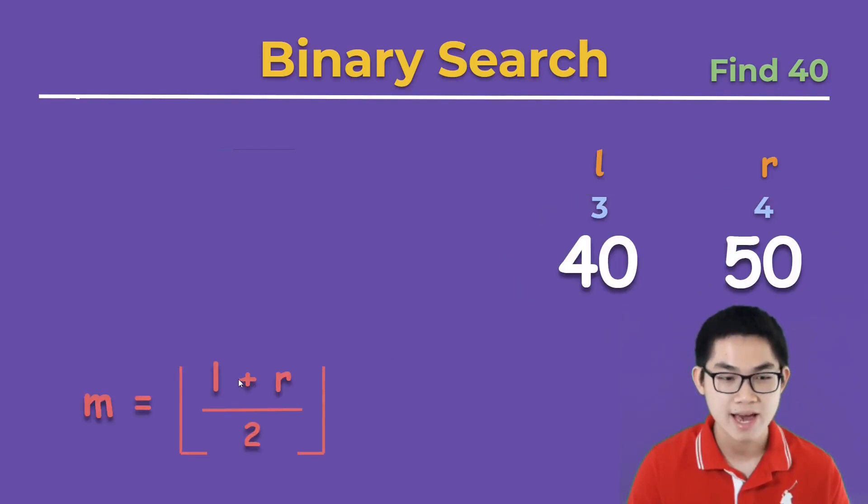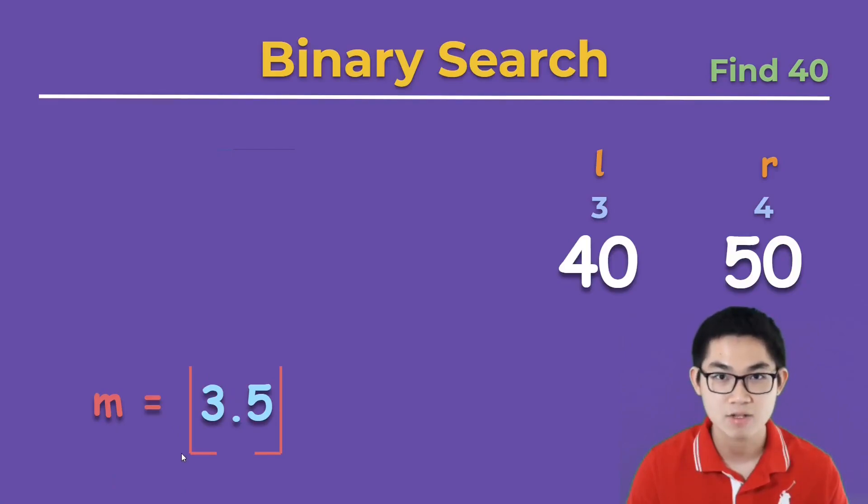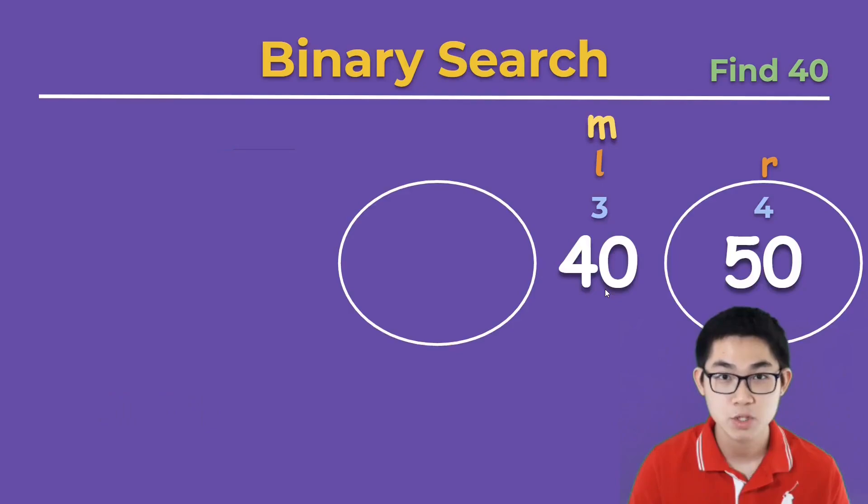So we calculate mid. L is 3, R is 4. We get 7 divided by 2 which gives us 3.5, and the floor sign means you basically round down, so 3.5 becomes 3 and then we split the array into two groups again.